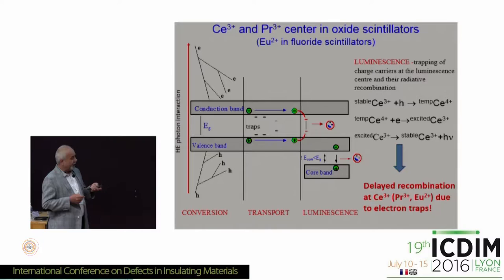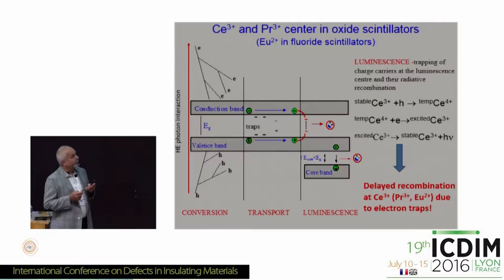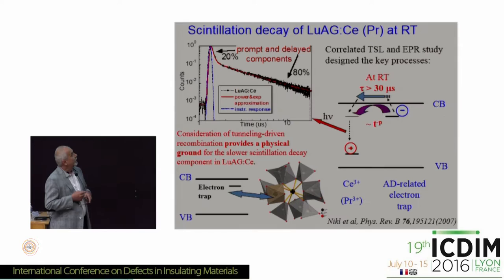Here is a well-known picture of the scintillation mechanism. Because we are dealing with Cerium 3+, Praseodymium 3+, and Europium 2+, this classical three-step mechanism applies. The ion first needs to capture the hole — forming temporary Cerium 4+ — then capture an electron from the conduction band, and then you get the light. Any delayed or slow components in the scintillation response are typically due to delayed recombination at these ions because of electron traps.